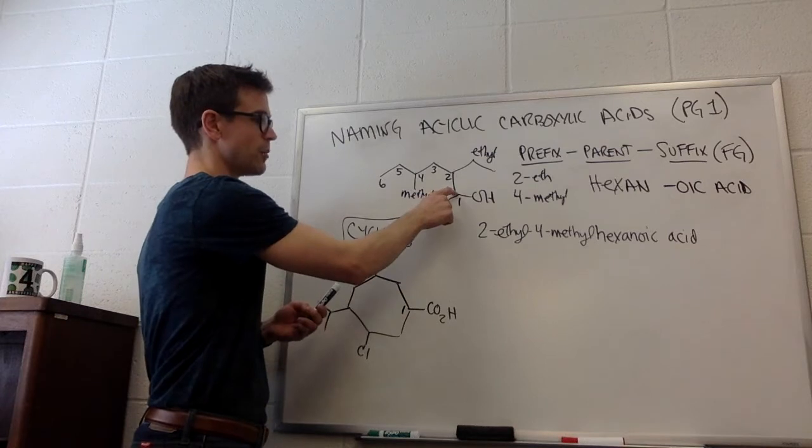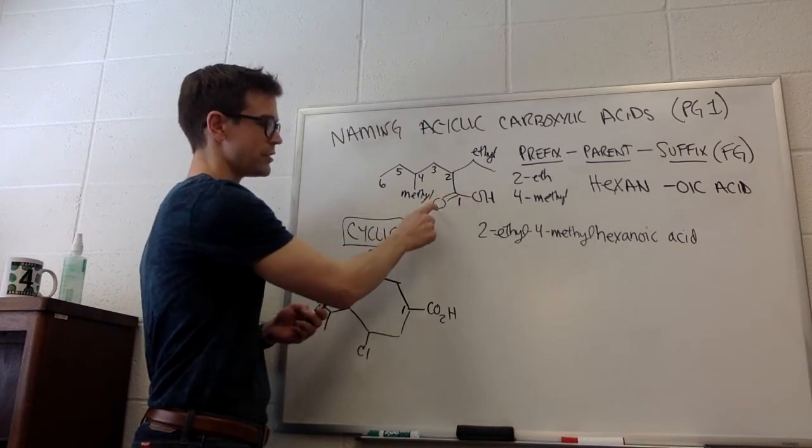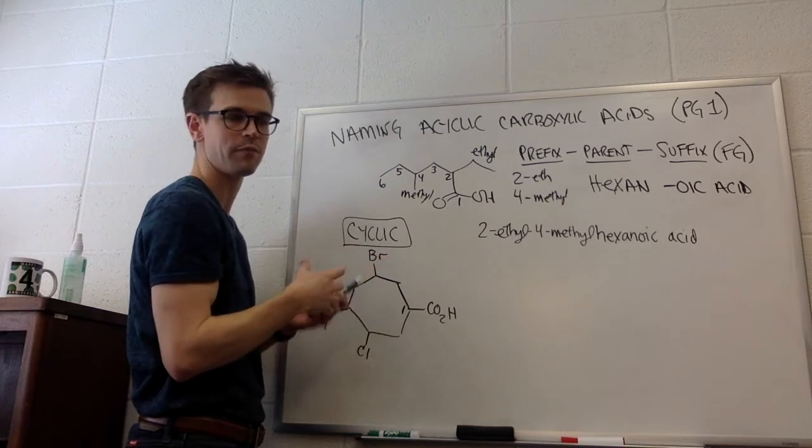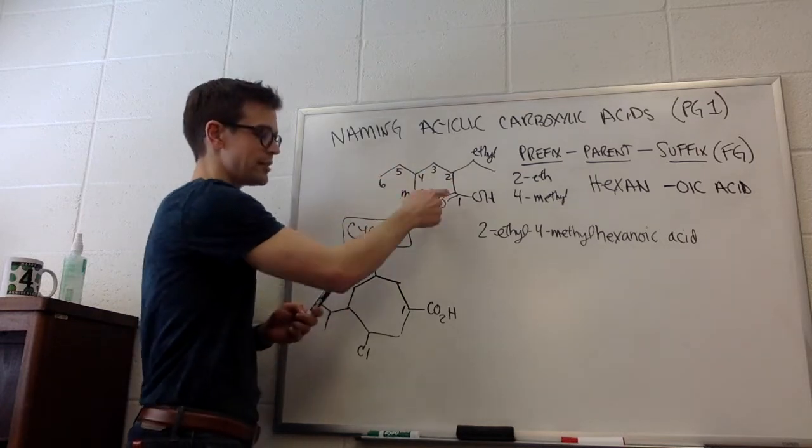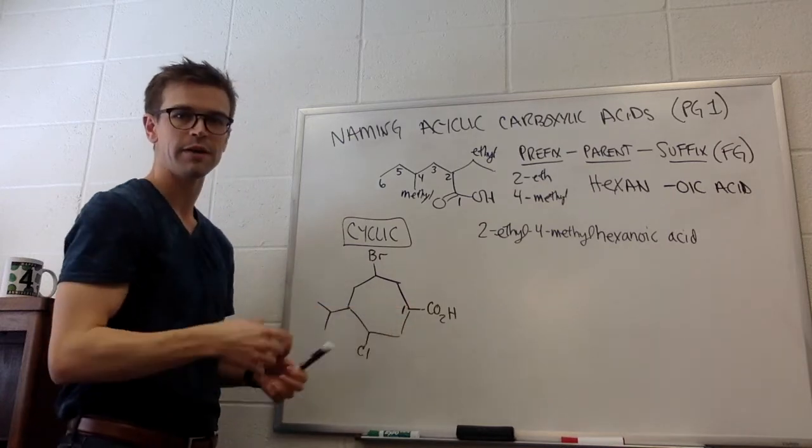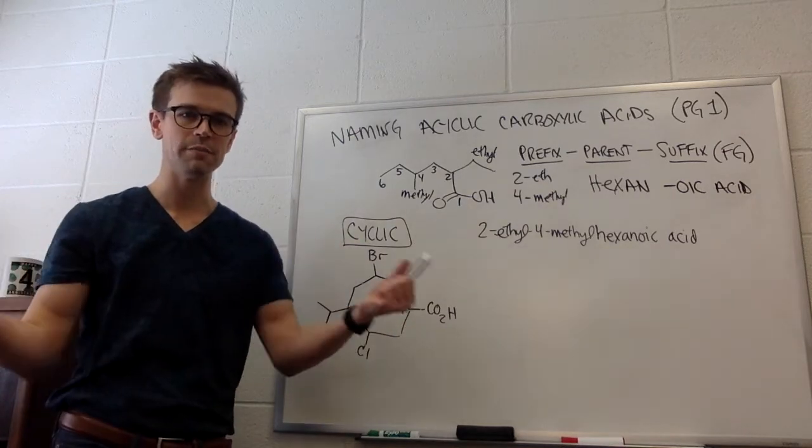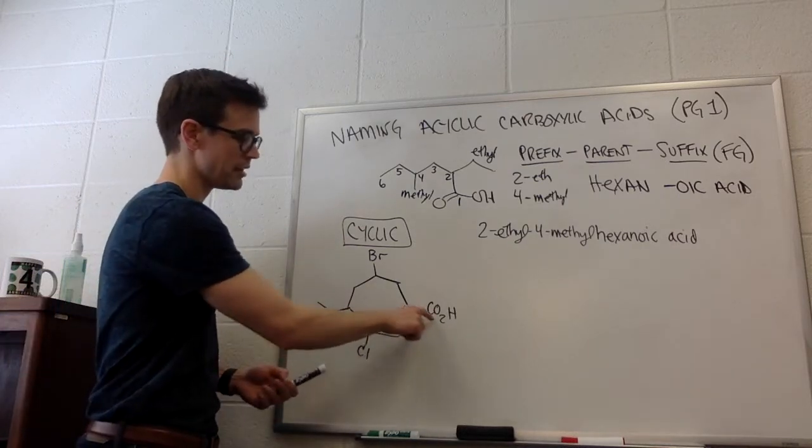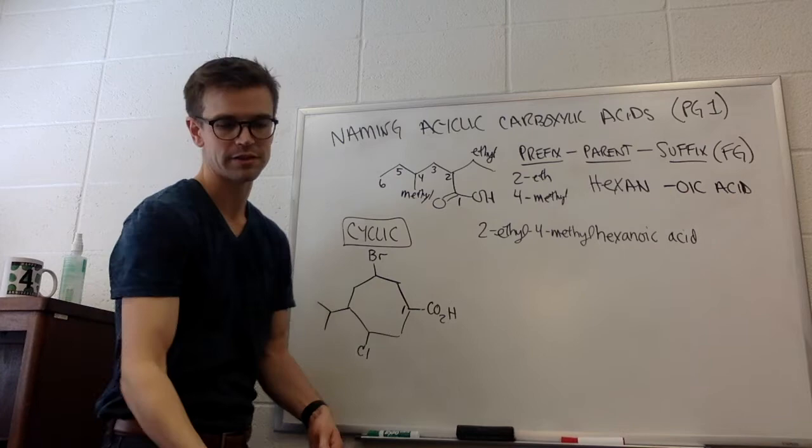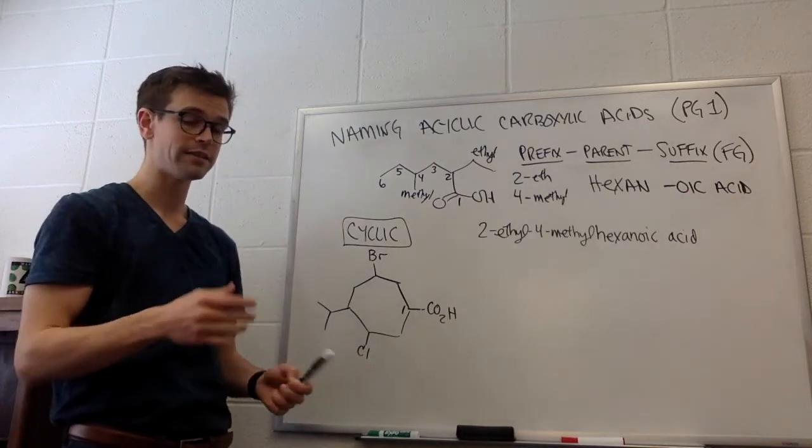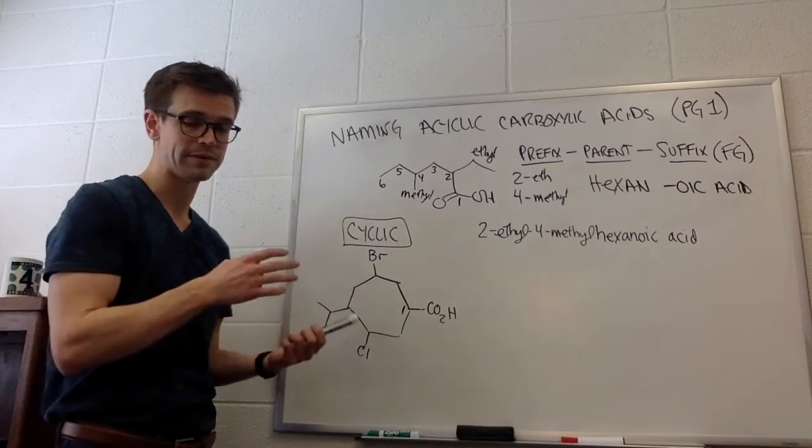We can't have a carboxylic acid that is inside of a ring because it doesn't have enough places to bond it to other carbon atoms. So we number the position that the CO2H is on as position one. So that was the first rule, carboxylic acid is automatically assigned position one.